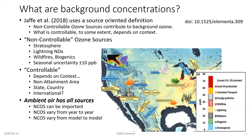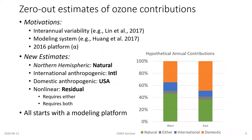Ambient air has all those sources — non-controllable as well as controllable. The non-controllable can be important; they vary strongly from year to year, depending on meteorology, transport patterns, temperature and climate. In addition, the non-controllable can vary from model to model — two different models may not give the same answer. That means we need to create more estimates of the non-controllable ozone sources.